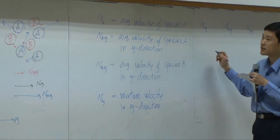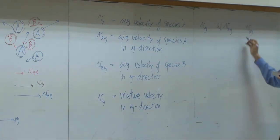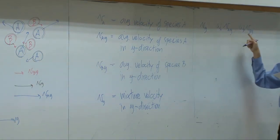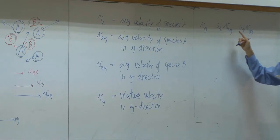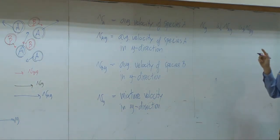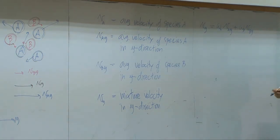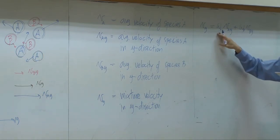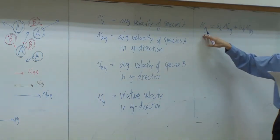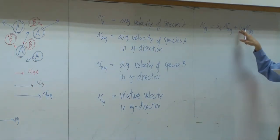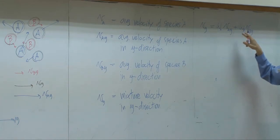And the amount is represented by mass fraction. So you know that it depends on the velocity of each species and it depends on the amount. So people propose that it can be calculated based on this equation. The higher the fraction of A, the average velocity of the mixture becomes closer to A, because this term becomes 1 and this becomes 0.